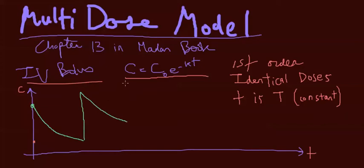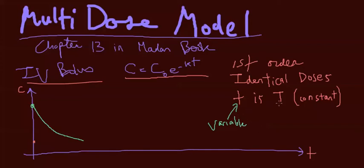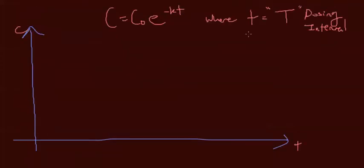In a multiple dose model, the doses are identical. The last important thing to understand is the difference between little t and big T. Little t is time — that's variable. Big T is also called the dosing interval, and that's going to be constant.